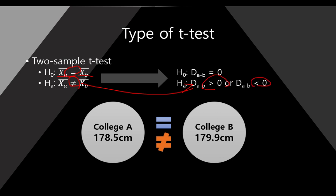And here, the D_A-B means the difference between these two means. This is the first type of T-Test, two-sample T-Test. It is a very representative type of T-Test.